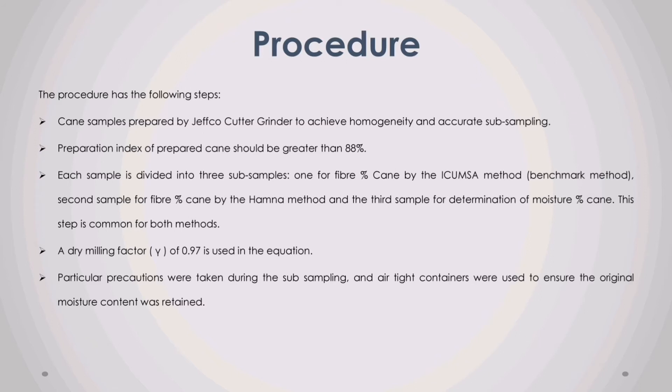Procedure. The procedure has the following steps. Cane samples are prepared by a Jeffco cutter grinder to achieve homogeneity and accurate subsampling. Preparation index of prepared cane should be greater than 88 percent. Each sample is divided into three subsamples: one for fiber percent cane by the ICUMSA method as the benchmark method, a second sample for fiber percent cane by the Hamner method, and the third sample for determination of moisture percent cane.